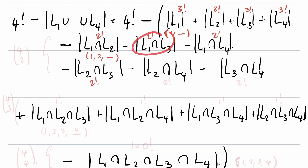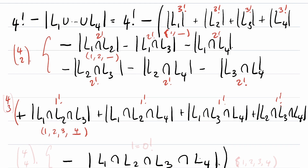The same holds for the other pairwise intersections, and there are 4 choose 2 of them. How many lists have 1 in position 1, 2 in position 2, and 3 in position 3? The only option is to have 4 in the fourth position, so there's just one — that's 1 factorial. The same applies to the other triple intersections, and there are 4 choose 3 of them. Finally, how many lists have 1, 2, 3, and 4 each in their respective positions? There's only one such list, which we write as 0 factorial, and there are 4 choose 4 such intersection sets.